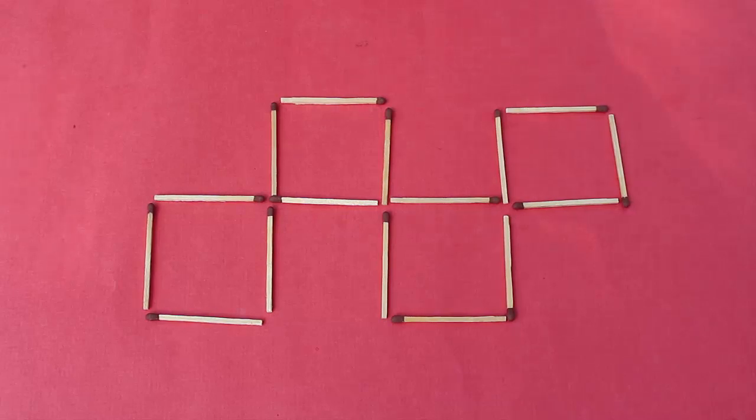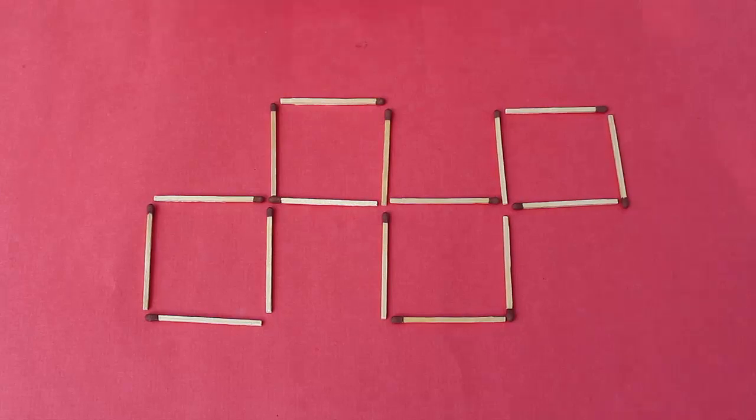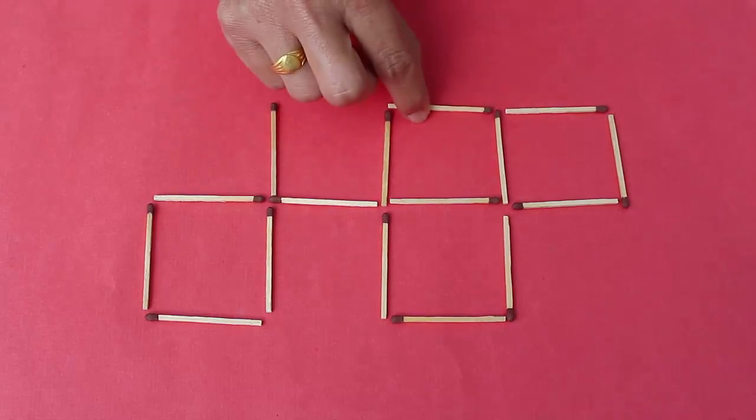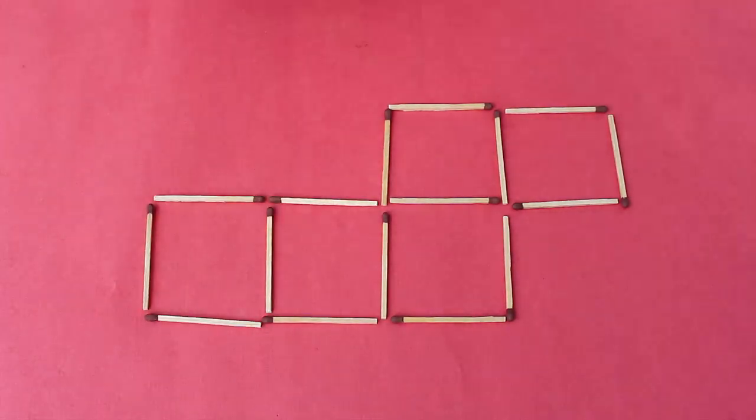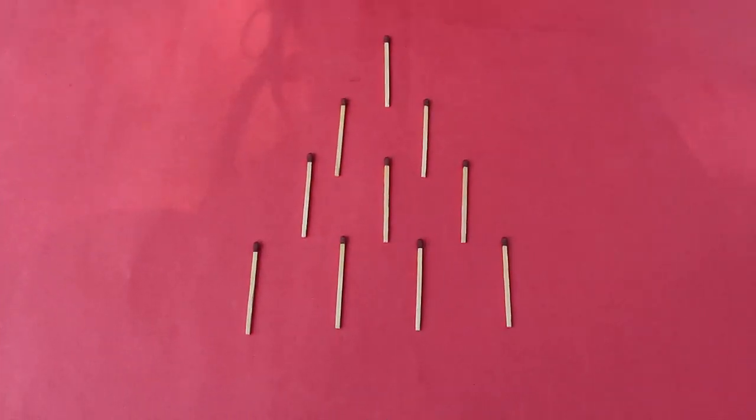In this puzzle you have four squares of exactly the same size. By just shifting two sticks can you make five squares. Well shift one down below and this is it.